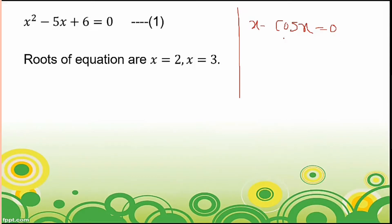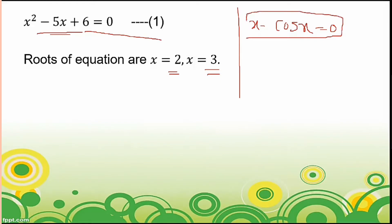Now take another example: x − cos x = 0. Here cos x is a trigonometric function, and written as a series it contains infinite powers of x. So this equation has an infinite number of roots and it is not possible to find even a single exact root. This type of equation is called a transcendental equation, and here we find only an approximate value of the root using bisection method, Regula Falsi, Newton-Raphson, and other methods.